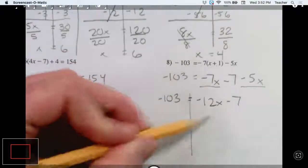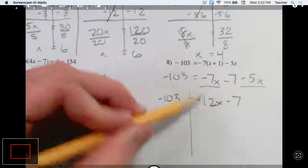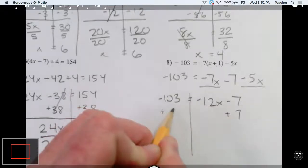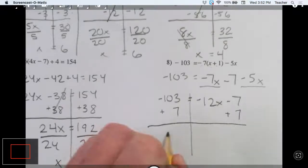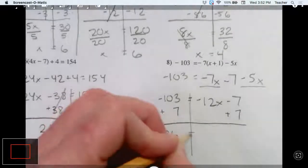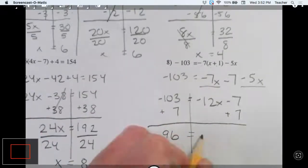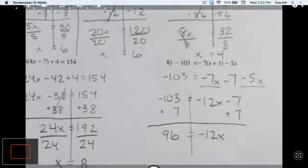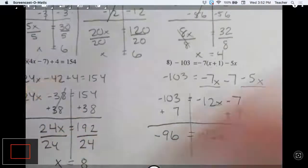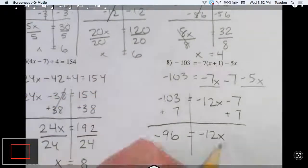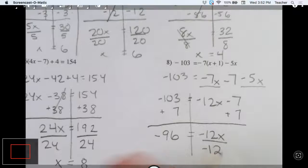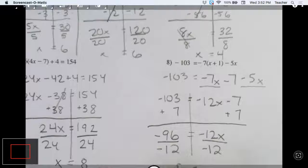All right. Got to get this x over here by itself. So let's add 7. I end up with 96 is equal to negative 12x. Oh, that's a negative 96. Almost made a similar mistake to many of you. Negative 103 plus 7 is negative 96. We're going to divide by negative 12, and we end up with x equals 8.